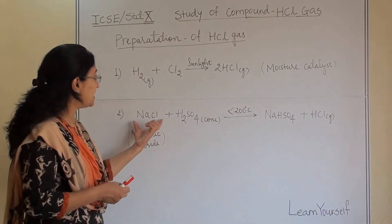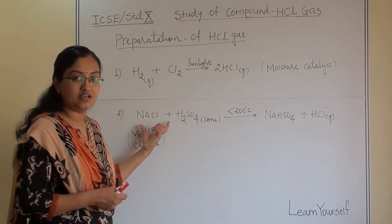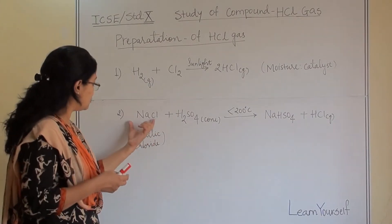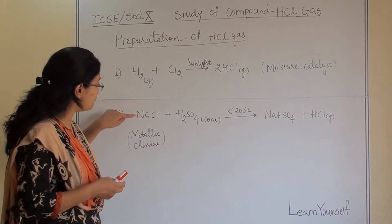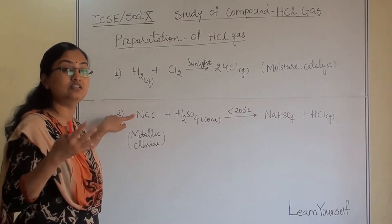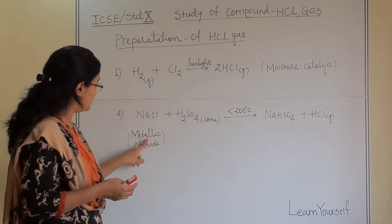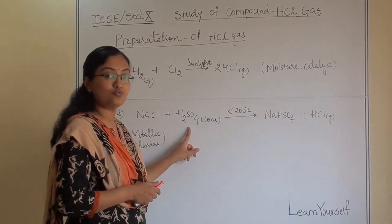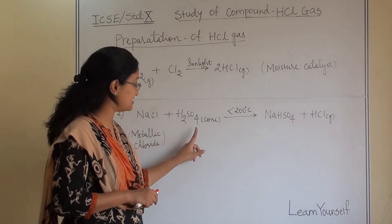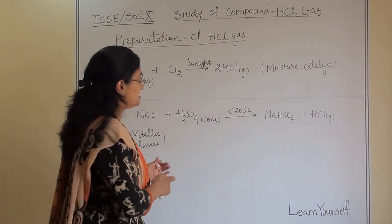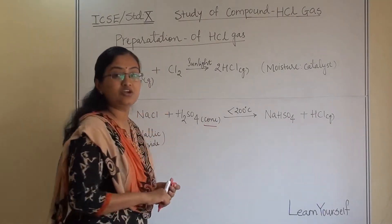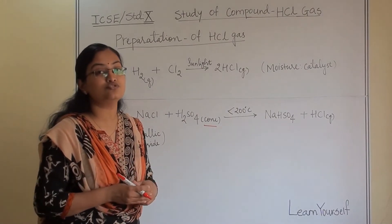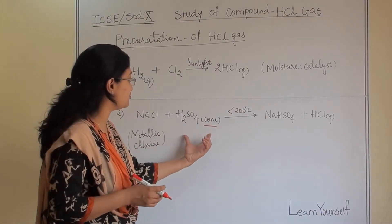In the second method, we can take any metallic chloride. Here we have taken NaCl, that is sodium chloride. At the place of sodium you can take any other metal. So this metallic chloride is reacting with H₂SO₄, which is sulfuric acid. We have written 'conc.' here, which means concentrated — the concentration of sulfuric acid should be very high.